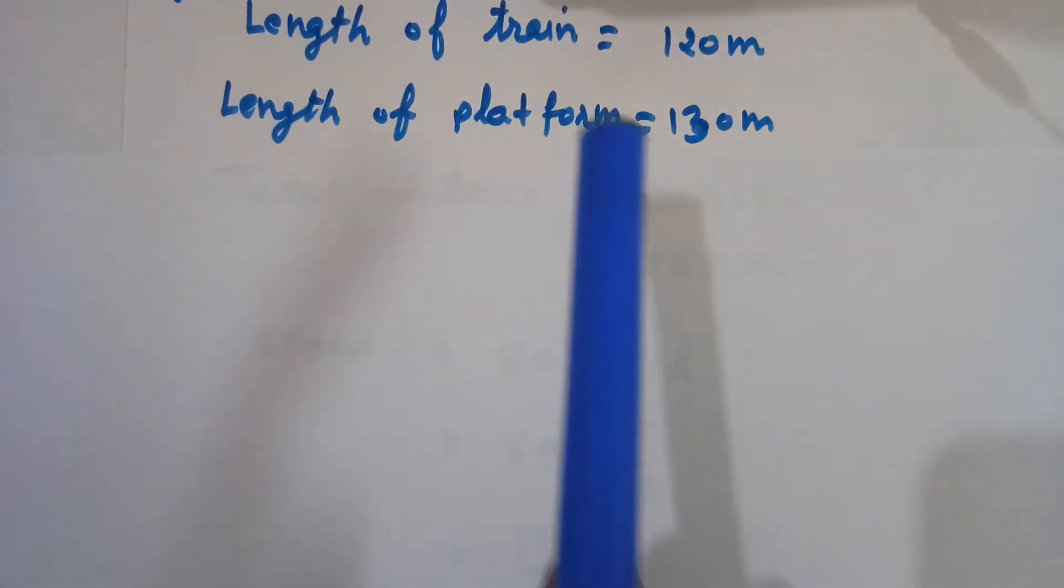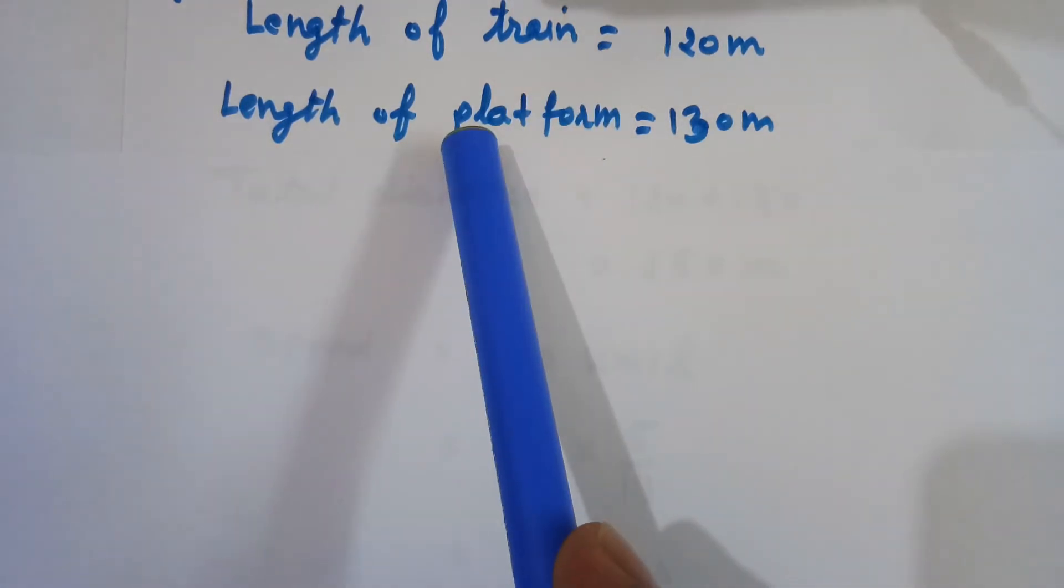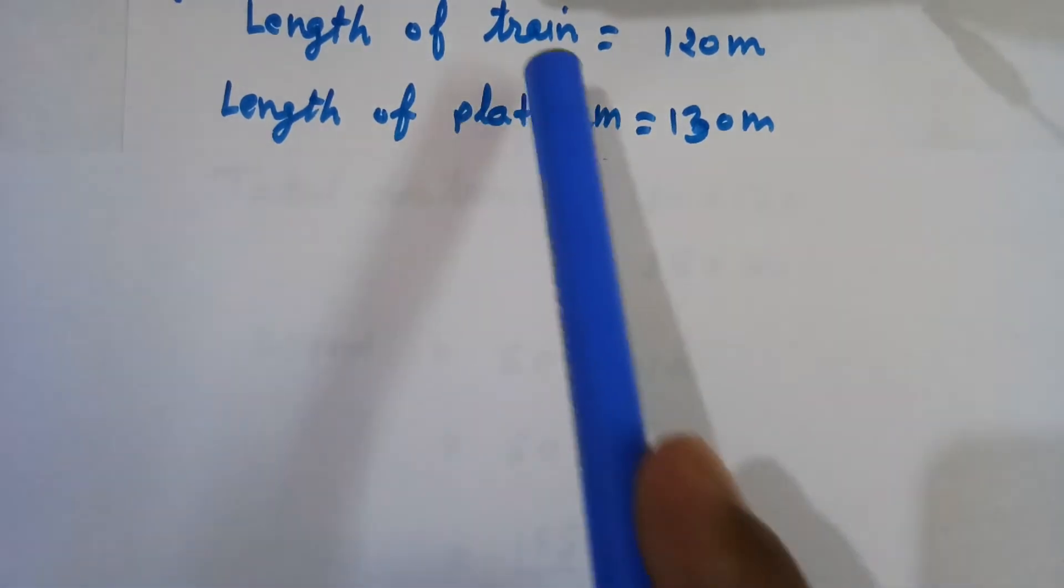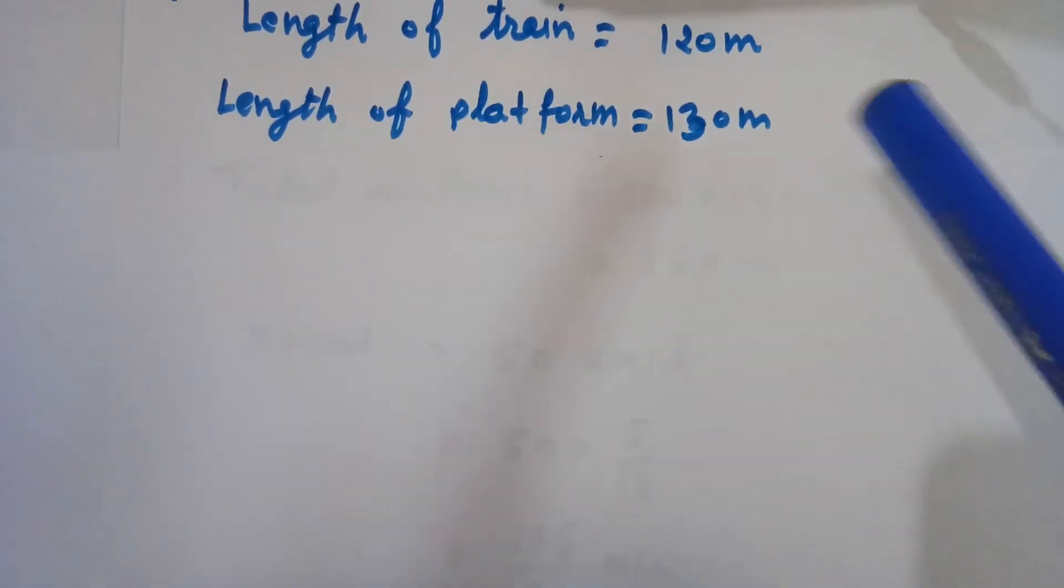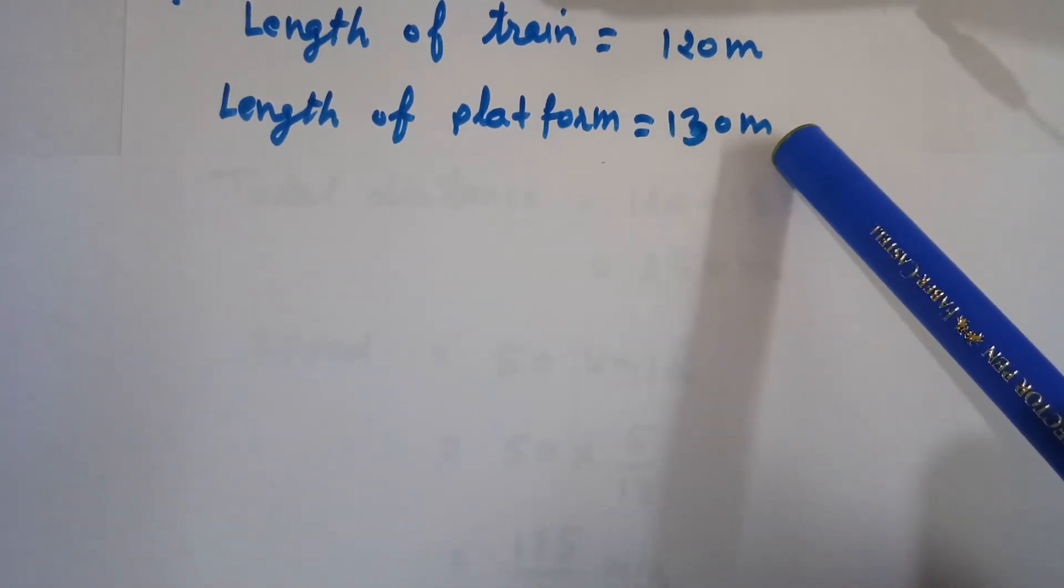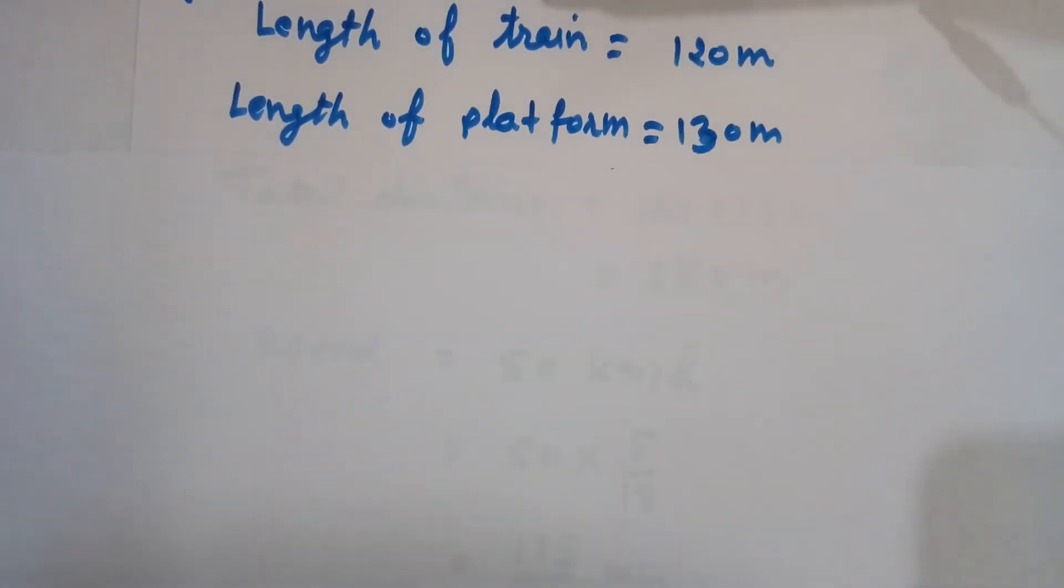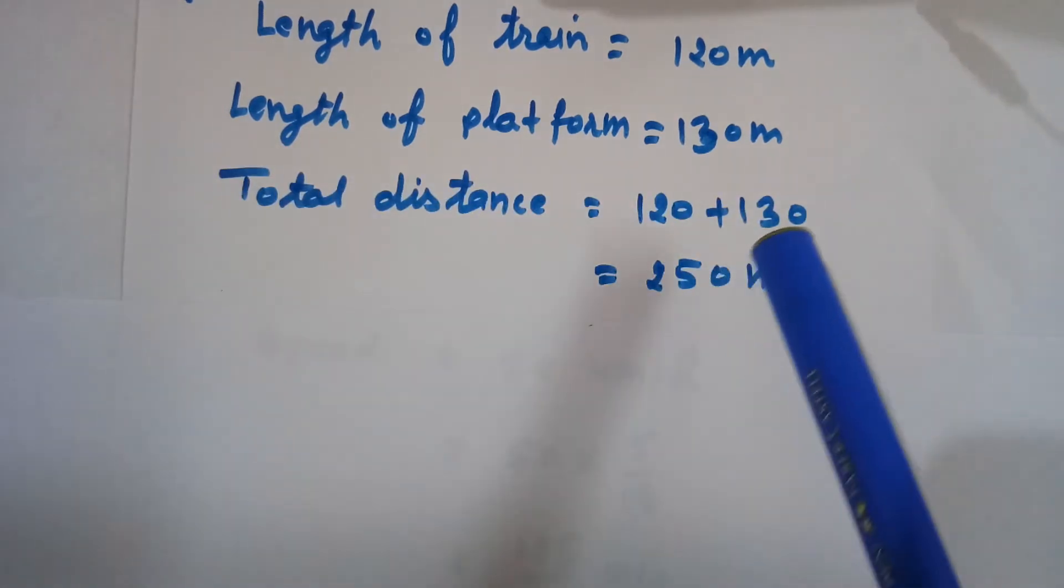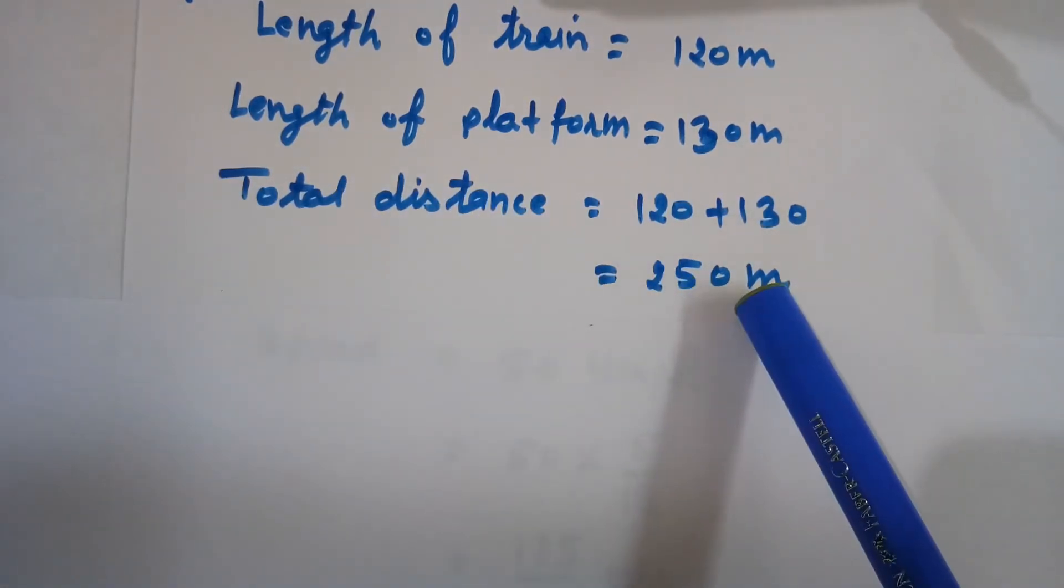To cross this platform by the train, the total distance will be equal to the length of the train plus the length of the platform. So total distance to be covered by the train is the length of the train plus the length of the platform, which equals 250 meters.